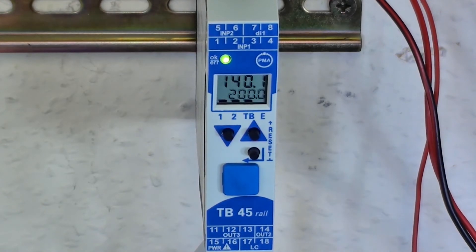The unit we're looking at is the model TB45-2, so it can be configured as either a temperature monitor or a temperature limiter.